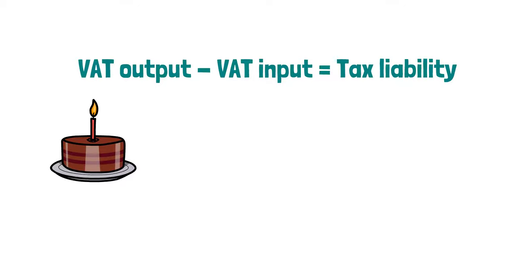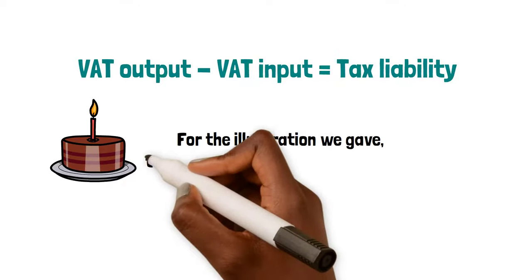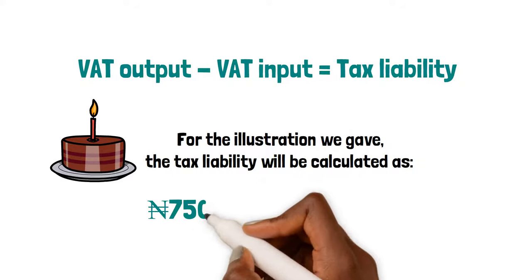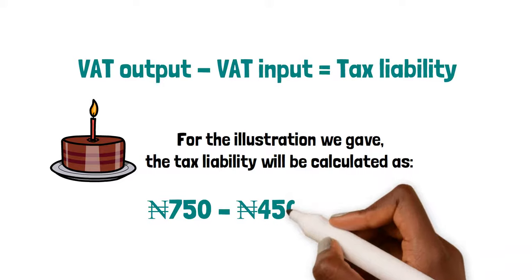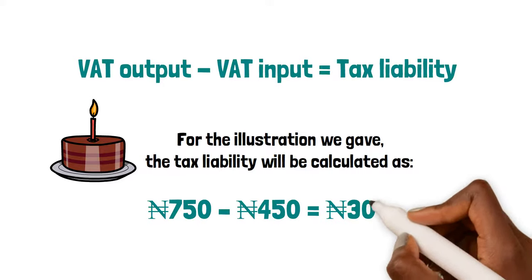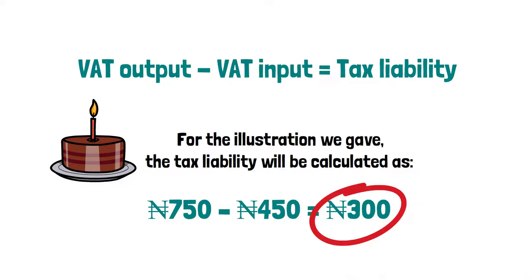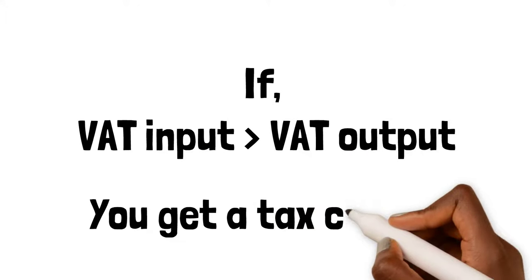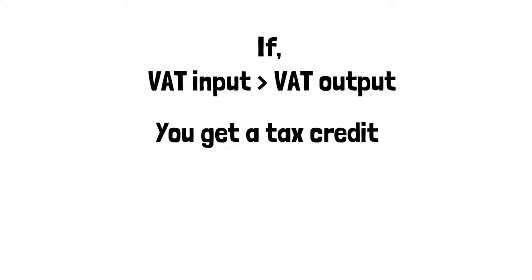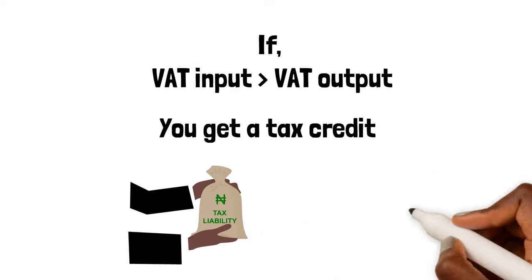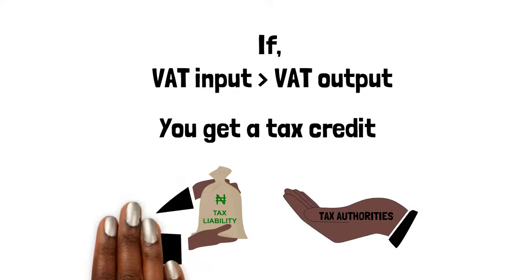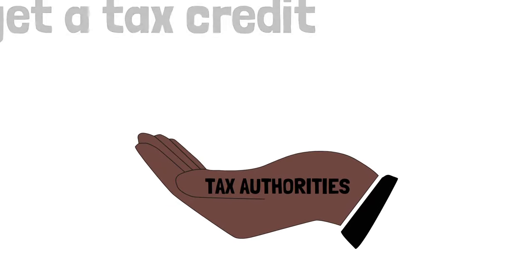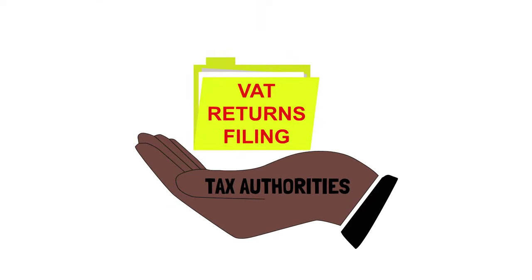For the illustration given, the tax liability will be calculated as 750 naira minus 450 naira equals 300 naira. If the VAT input exceeds the VAT output, you will have a tax credit, which will be utilized in the following months. This means VAT won't be remitted to the tax authorities until you make up for the loss. You still have to file your VAT returns though.